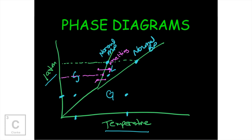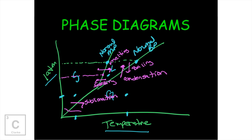So if we're going from a point in the solid region to the liquid region, that represents melting. Going from a liquid to a solid would be freezing. If we're in the liquid and we lower the pressure keeping the temperature the same — going from a liquid to a gas — that's boiling or vaporizing. If we start at a gas and increase the pressure, going from a gas to a liquid is condensation. And going from a solid to a gas — that's sublimation — or vice versa, from a gas to a solid is deposition.